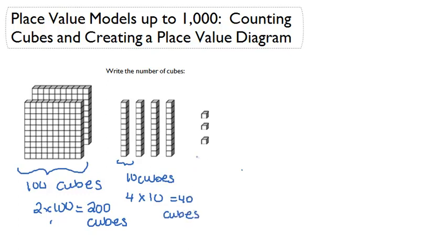And then finally, on the very right, we have cubes broken down one by one. We have three cubes. So we would do 3 times 1 to give us 3.